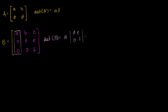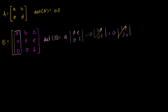Then minus 0 times the determinant of its submatrix — that gives B, C, 0, F — and plus 0 times the determinant of the submatrix B, C, D, E. These two terms are both 0 since we're multiplying by 0, so we're left with A times the determinant of D, E, 0, F. That determinant is DF minus 0 times E, which is just DF. So the determinant of B is ADF.